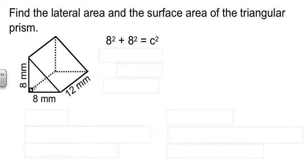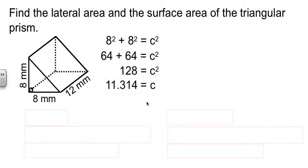Now luckily, we know this is a right triangle. It makes life a lot simpler. So we can do Pythagorean theorem to it, clean up the arithmetic, and we find out that c is a little over 11, 11.314. That will help us find the lateral area.